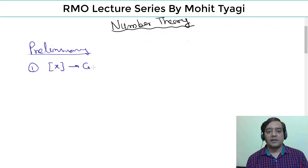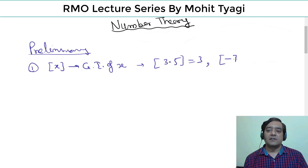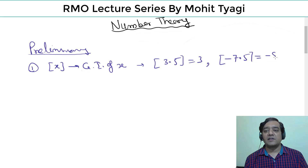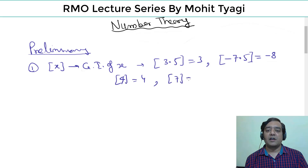First, ⌊x⌋ (greatest integer of x) gives you the integral part — the largest integer to the left of x on the number line. For example, ⌊3.5⌋ = 3 (just left integer), ⌊-7.5⌋ = -8. If x is 4, integral part is 4; if 7, integral part is 7.